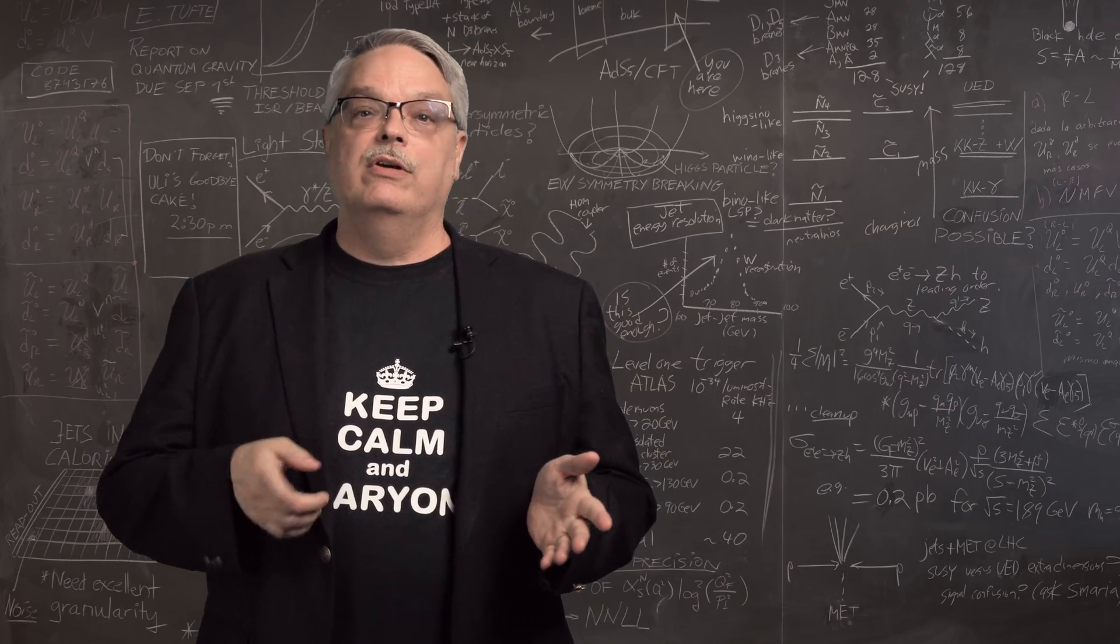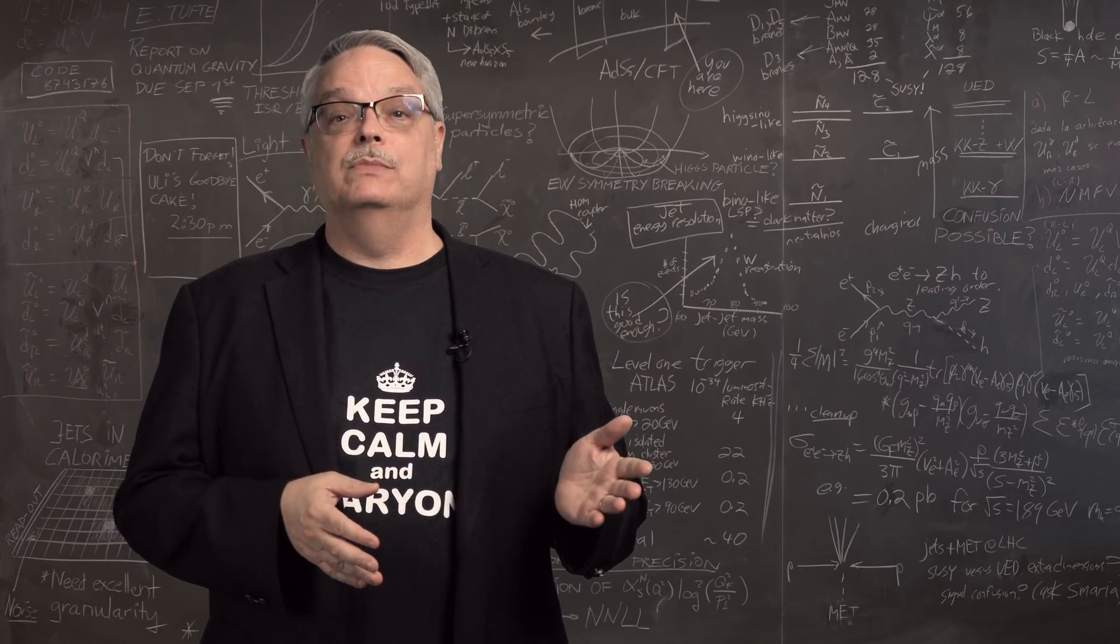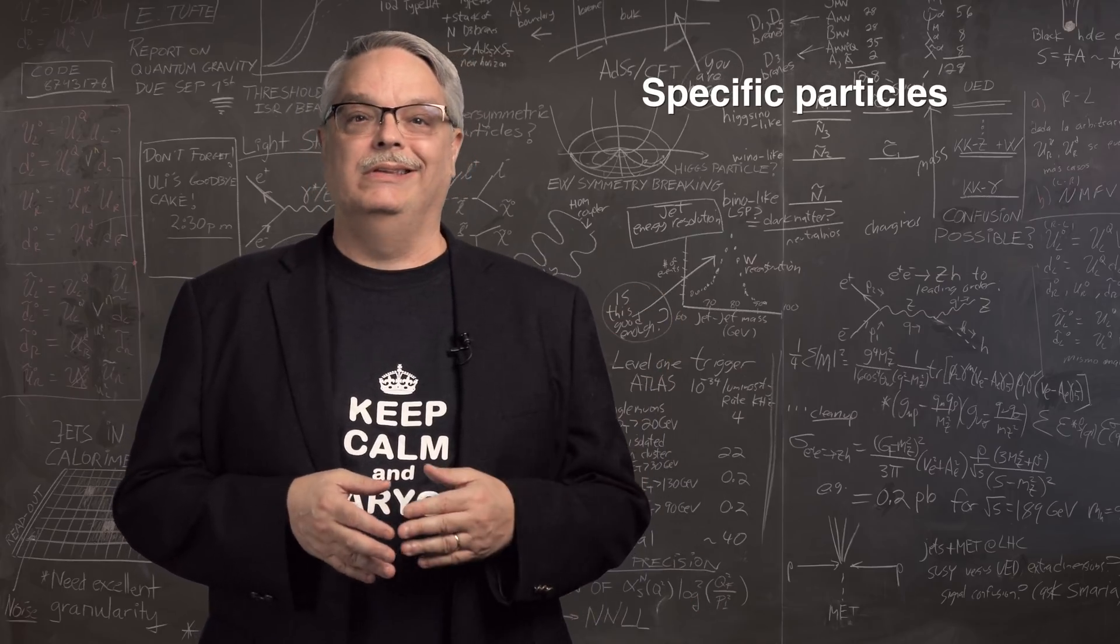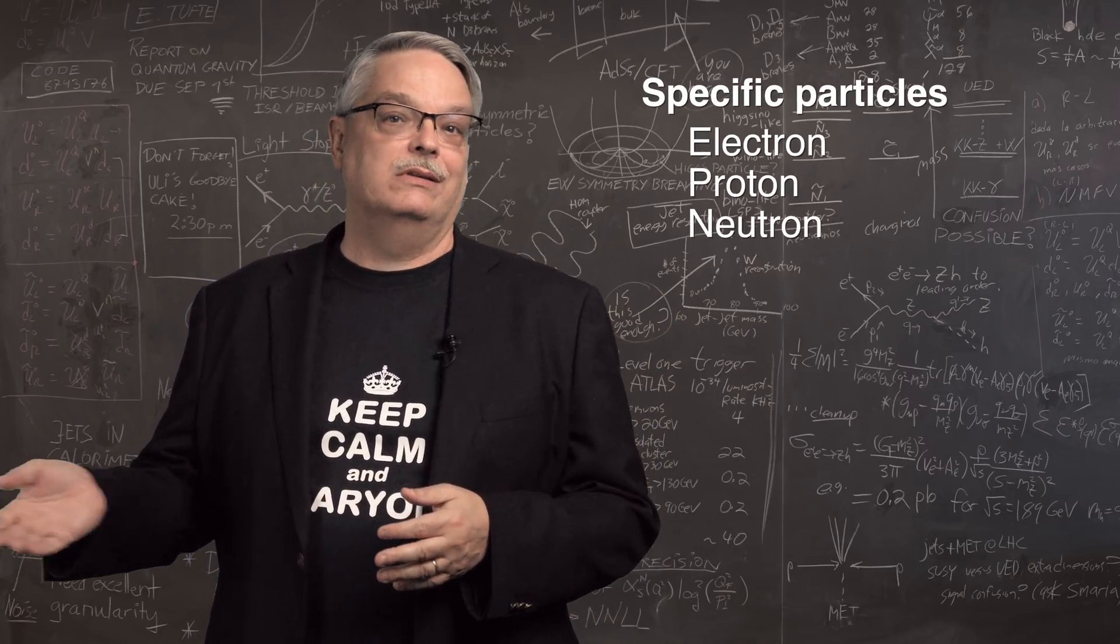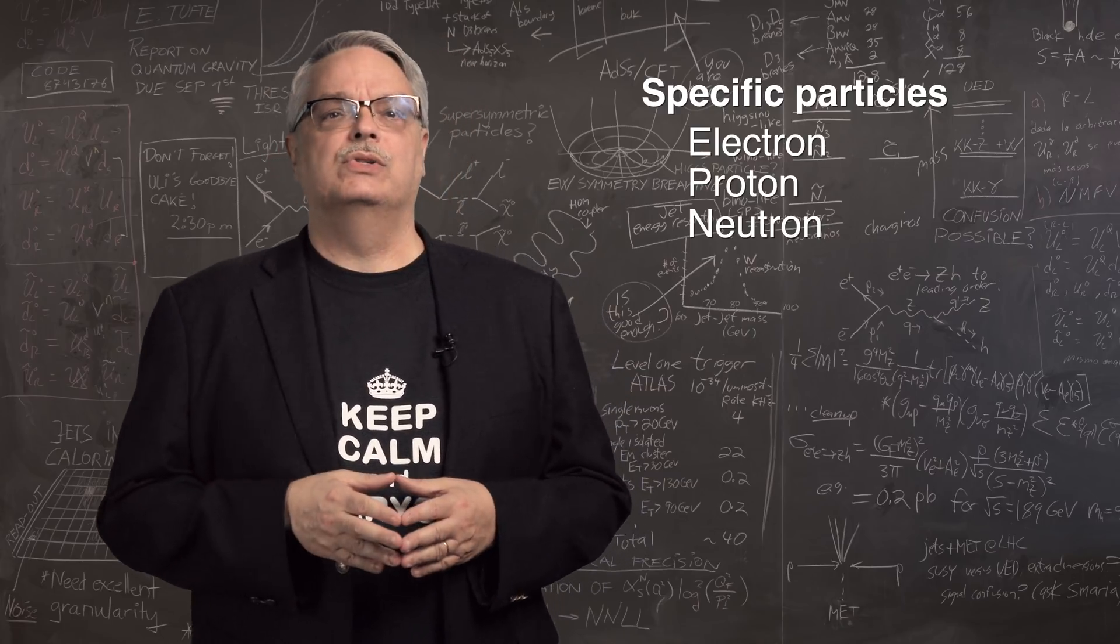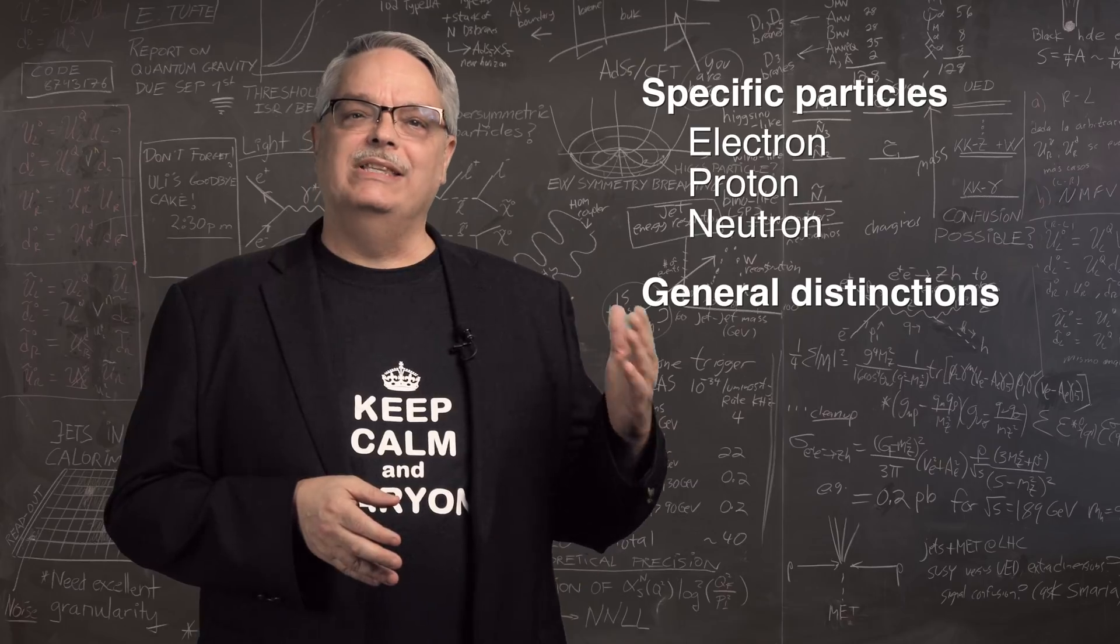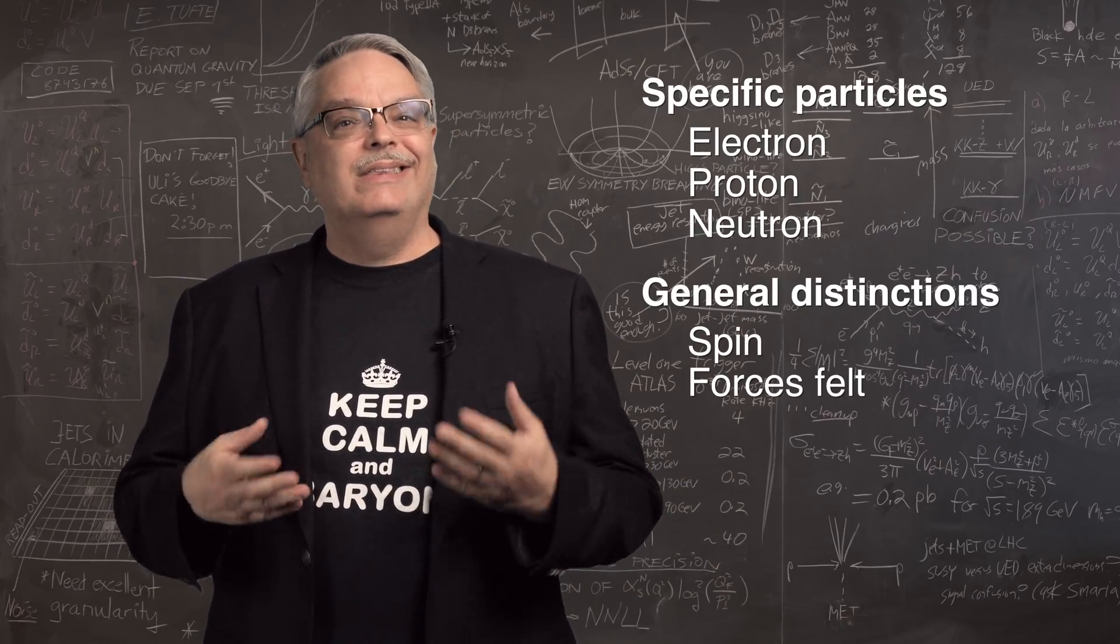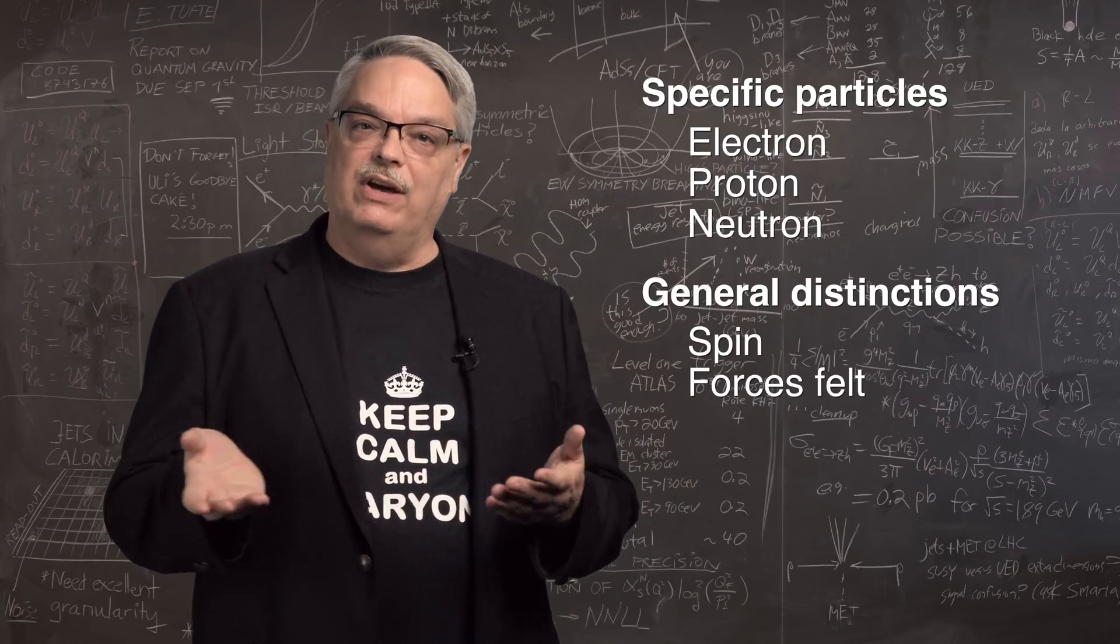To begin with, there are two types of names. There are the names that are specific types of particles, like the electron, proton, or neutron. Then there are the names which are the classes of particles, ones that distinguish between different kinds of spins, the forces the particles feel, and the kinds and types of particles found inside them.